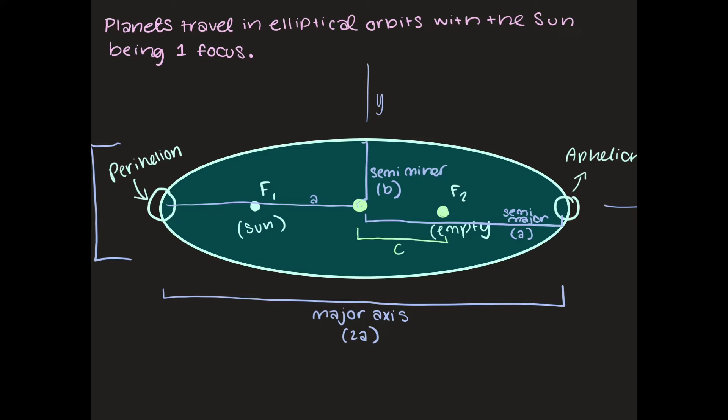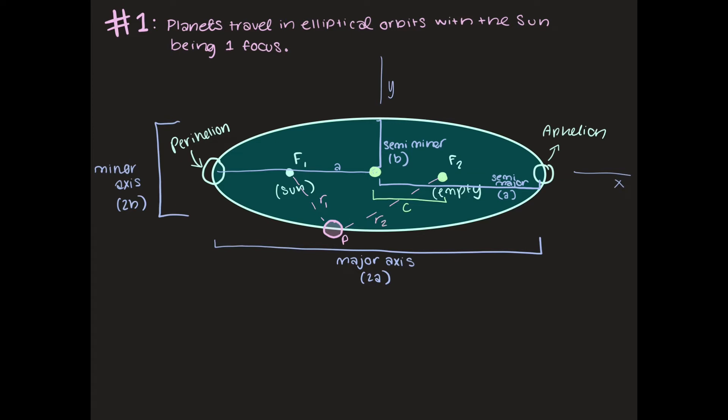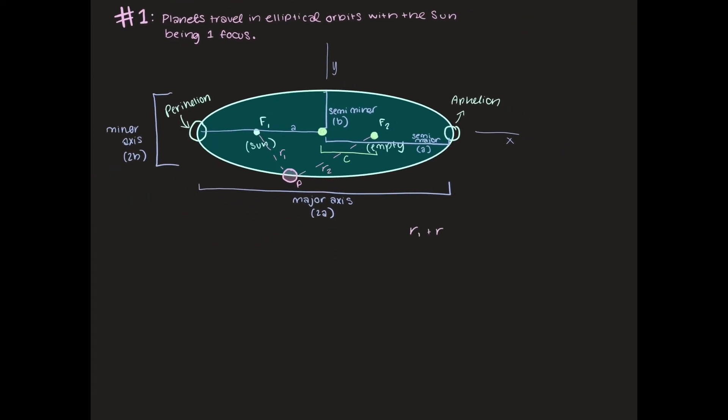There's one more property that we can define of this orbit but first we have to draw the planet that's actually orbiting. So let's assume that we have a planet on the edge of our orbit and it's not at the perihelion or the aphelion. In this situation we can say that the distance from our planet to our first foci we can define this as r1 radius 1 and then the distance from the planet to the second focus which is r2 we can say that r1 plus r2 is actually equal to 2a which is our major axis.